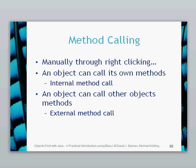An analogy might be: in a car you might have one method of pressing the accelerator and then another method might be to actually allow the car to go forward. So we use these internal methods all the time. The other type of method call is an external method call — you can call another object which you've created and then call the method of that object. That's called an external method call, and we're going to go through those now.